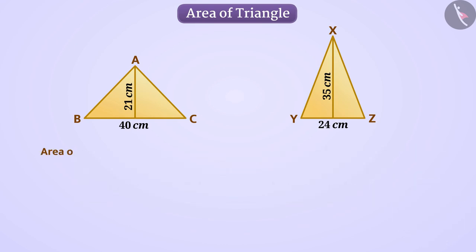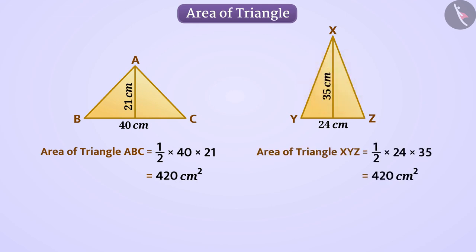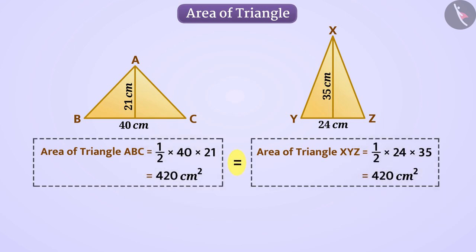Area of triangle ABC is equal to 420 square centimeters. Similarly, the area of triangle XYZ is also equal to 420 square centimeters. Here, the area of both triangles is equal. Can we say that they are congruent?